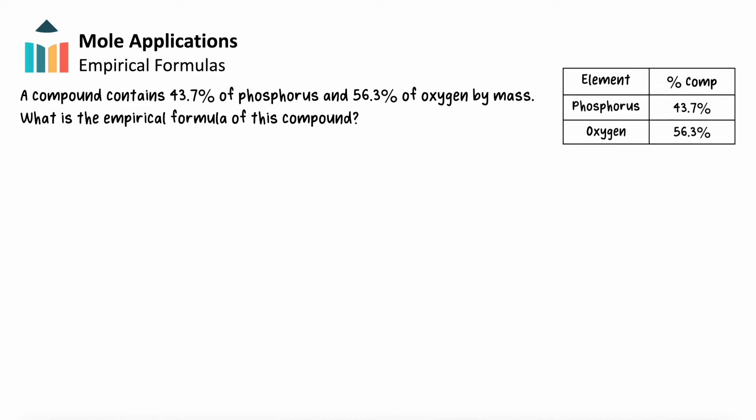Here's a sample problem. A compound contains 43.7% of phosphorus and 56.3% of oxygen by mass. What is the empirical formula of this compound? Remember, the goal is to find the lowest whole number mole ratio of oxygen and phosphorus in the sample. To do this, we'll follow three steps.